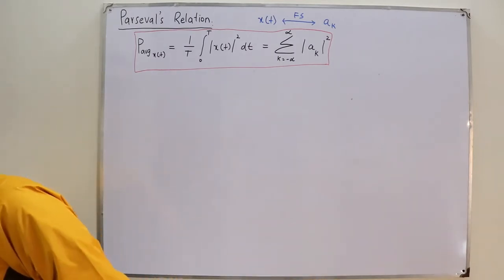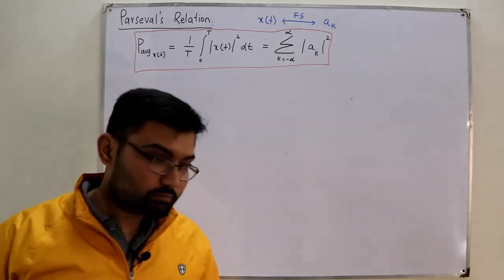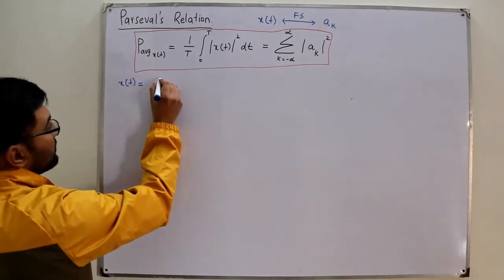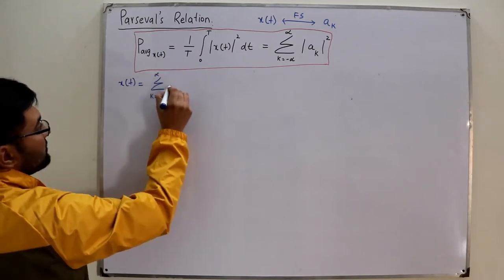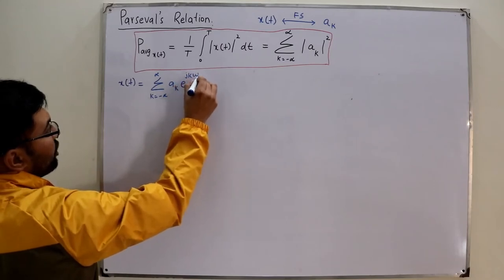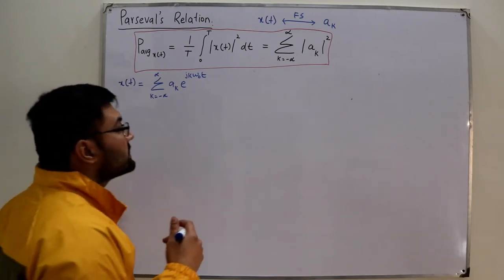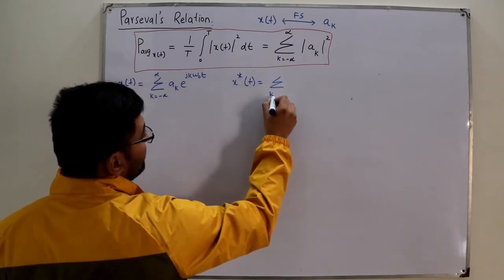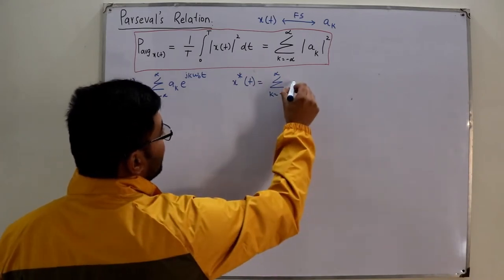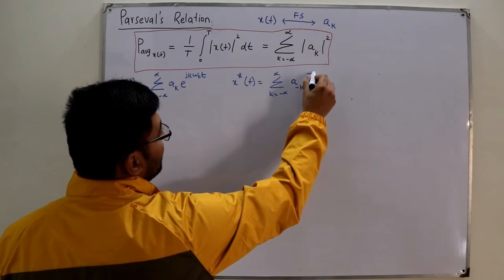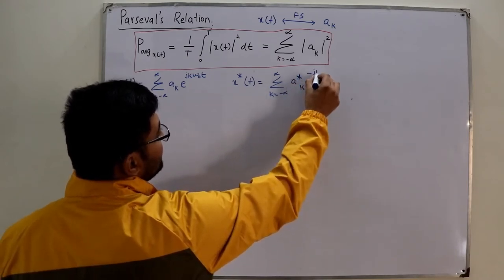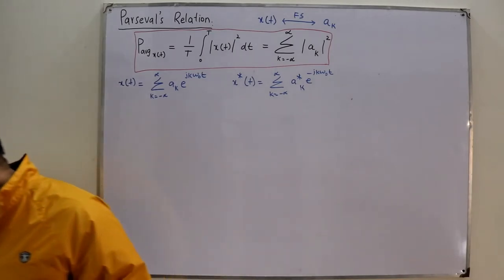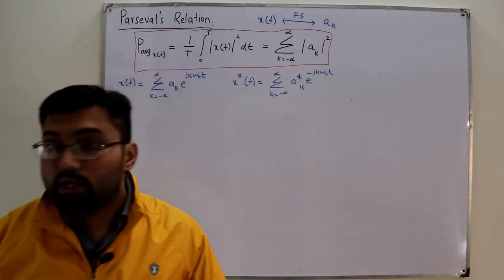Let us prove it. We know that x(t) equals the synthesis equation: summation with k running from negative infinity to positive infinity of a_k times e^(jkω₀t). If I take the conjugate of it, x*(t) would be: summation with k from negative infinity to positive infinity of a_k* times e^(−jkω₀t). This is now the conjugate of x(t).